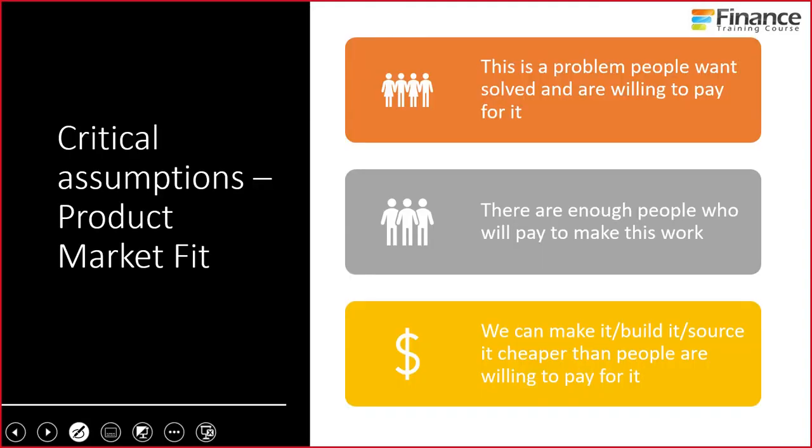Now when you talk about the critical assumptions, the first is with respect to product-market fit — is the problem that you're working on a problem that people want to solve and are willing to pay for? So a lot of you said you want to write a book on sci-fi, on stories, on getting into grad school, on how to go beyond being an engineer. These are all interesting topics that you think are of interest. But is this a problem that people are willing to pay for? Is it something that they want solved?